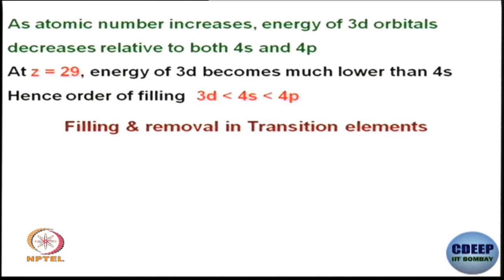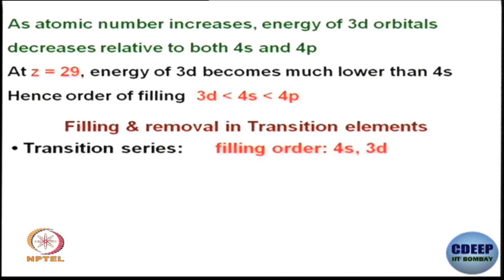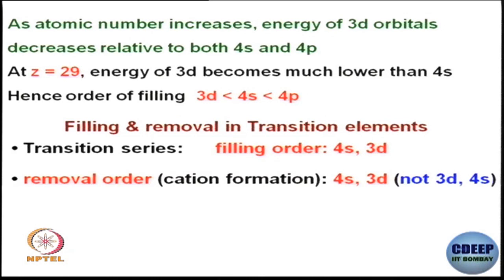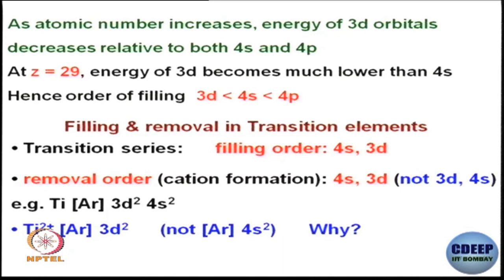Another thing to understand is: overall we say 4s fills first, then 3d — but what about the removal order? For the transition metal series, the filling order is 4s then 3d, but the removal order is also 4s then 3d. This is a little contradictory — you would expect that since 3d is filled out later, at removal time 3d electrons should go first, but that is not the case. 4s fills first and 4s also goes out first.